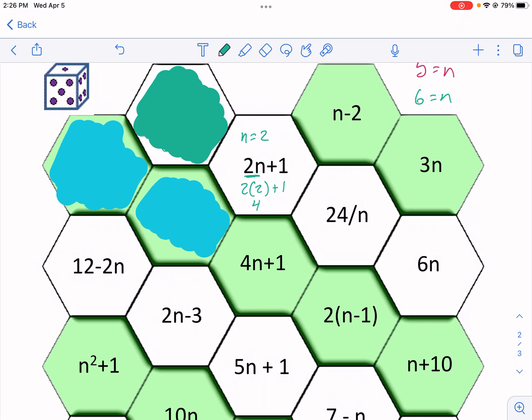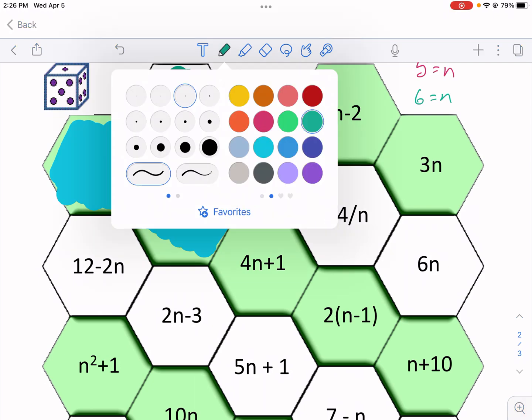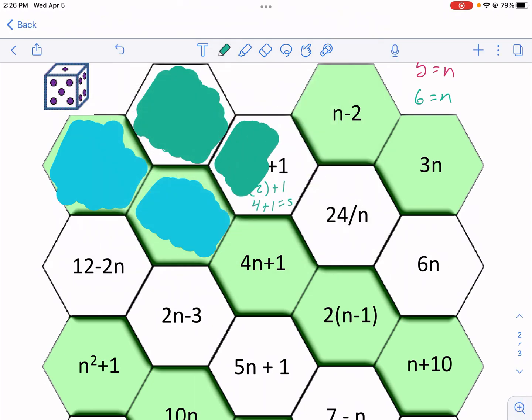Two times two is four. Order of operations here, you're gonna do multiplication before addition. Plus one, and that equals five. So I got it right. I get to color it in. That's my little token and I'm done with that one.